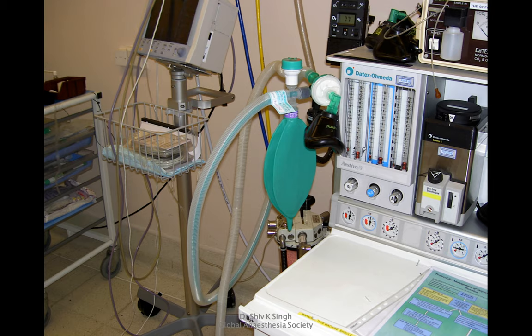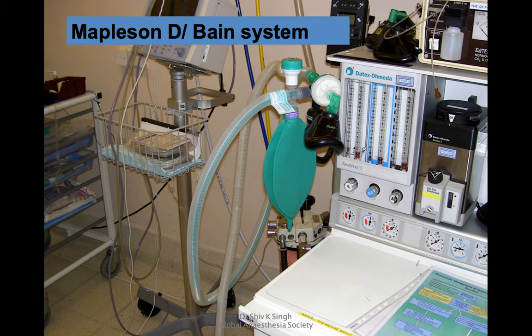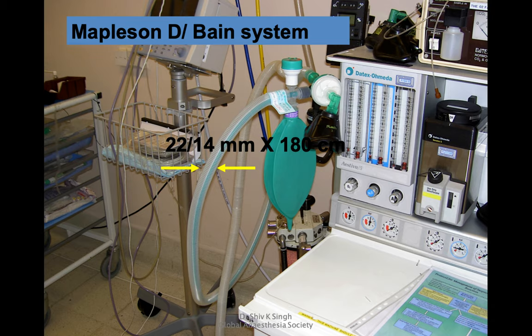Then we come to the favorite Mapleson D. What you see here is a coaxial breathing system — a green tubing runs through all the way to the mask or patient end. The reservoir bag and APL valve are at the far end. Even though they appear near the fresh gas flows, they are not, and this is the Mapleson D or Bain system, which is a coaxial version of Mapleson D. Since it has an inner and outer tubing: the outer tubing is 22 mm in diameter and 180 centimeters long. Accounting for the inner tubing, it holds 550 ml of fresh gas.